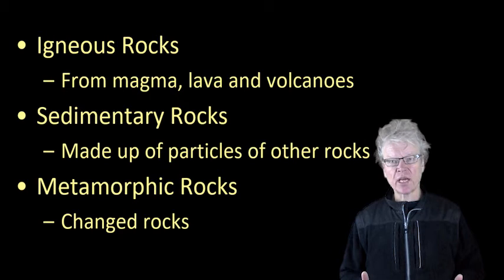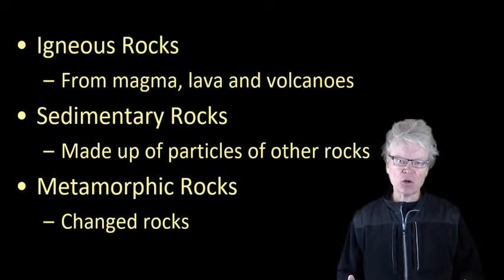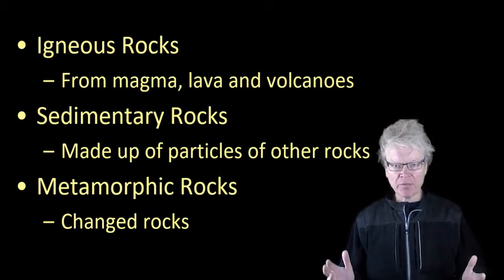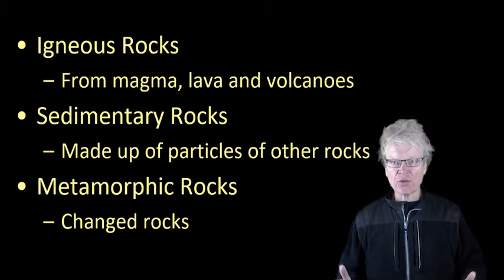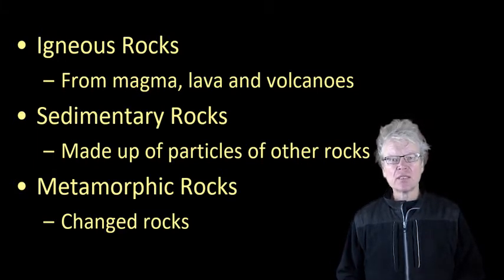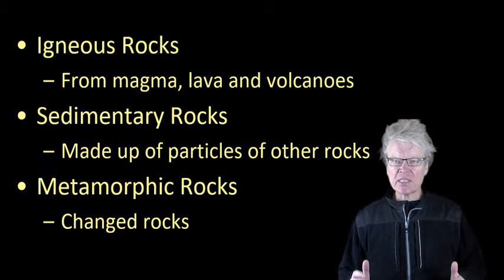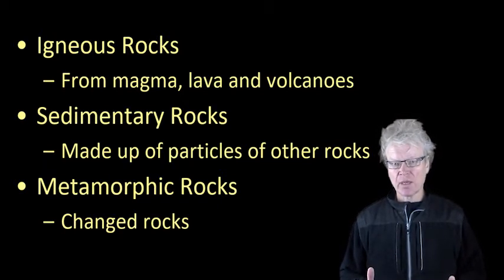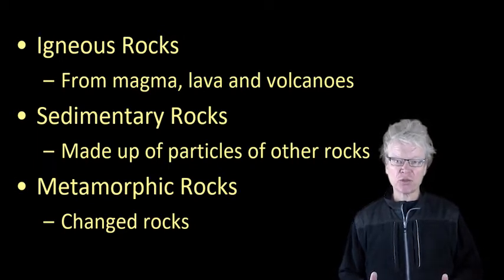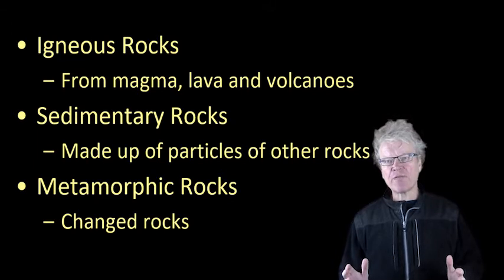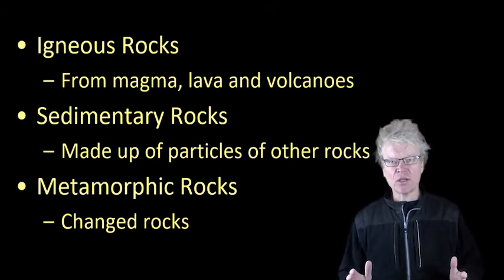Now we're going to have a look at the other two rock types. We've looked at igneous rocks and the processes that occur with that rock type. We're now going to look at the other two: sedimentary rocks and metamorphic rocks. Igneous rocks form from magma and lava and give us volcanoes and other features. Sedimentary rocks are made up of bits and pieces of other rock types, and metamorphic rocks are changed rocks. We can arrange these three rock types in what's known as the rock cycle.